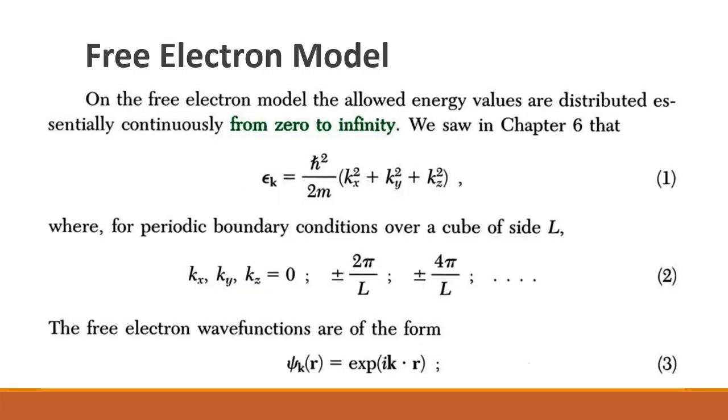In the free electron model, the dispersion relation is shown in equation 1. The corresponding eigenfunctions psi are plane waves with the real space representation psi proportional to e to the power i k dot r. We note that in the free electron model, there is only one band. The band structure is not periodic in k space. That is, the Brillouin zone is infinite in k space.